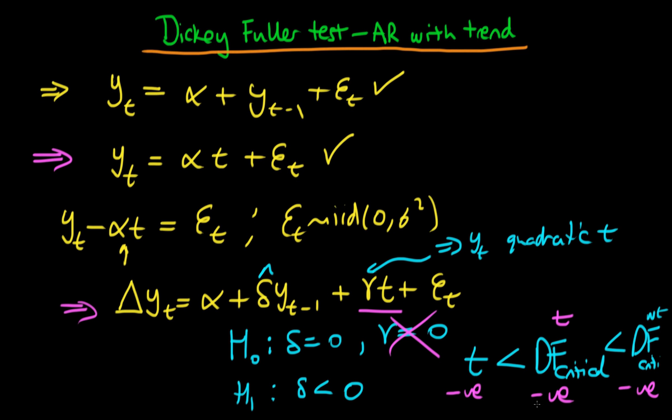So the idea is when we have a time trend we compare it with this augmented or slightly different Dickey-Fuller distribution, and if it's less than those particular critical values then we conclude that we have a process which is non-stationary even if we take into account a time trend.